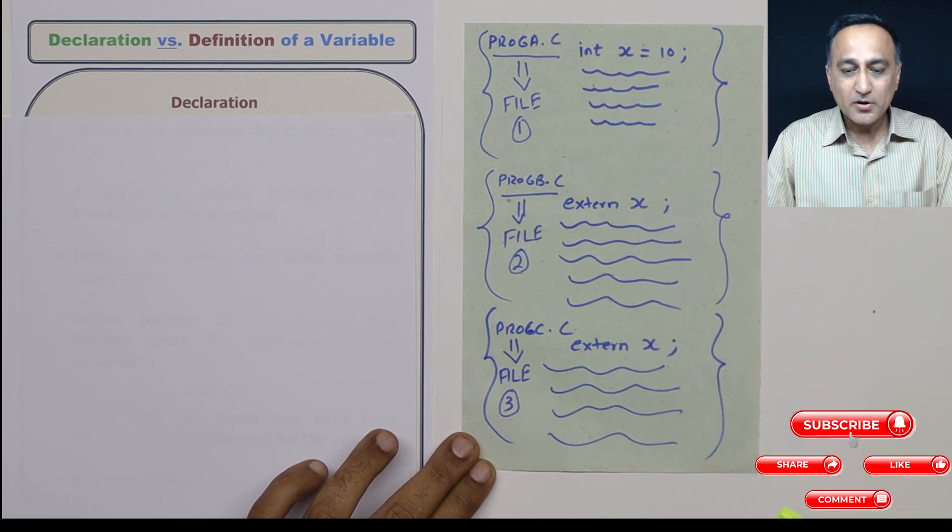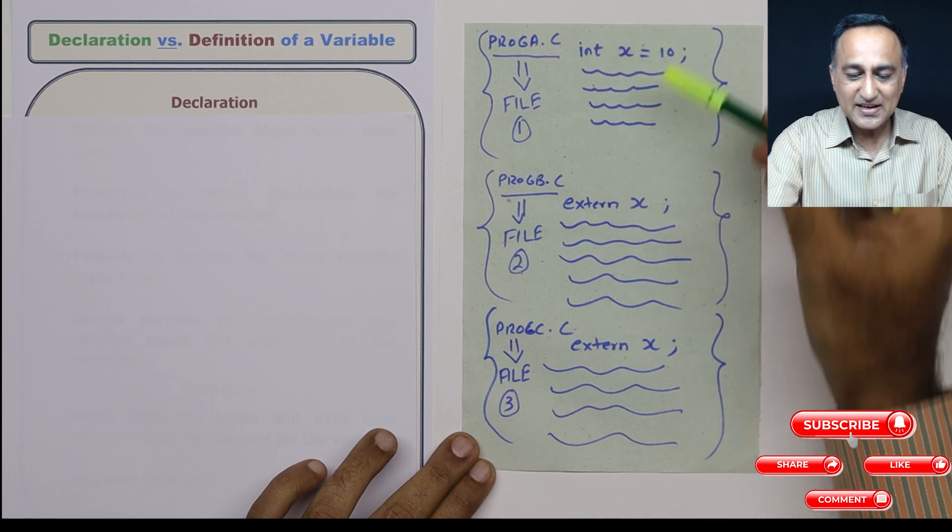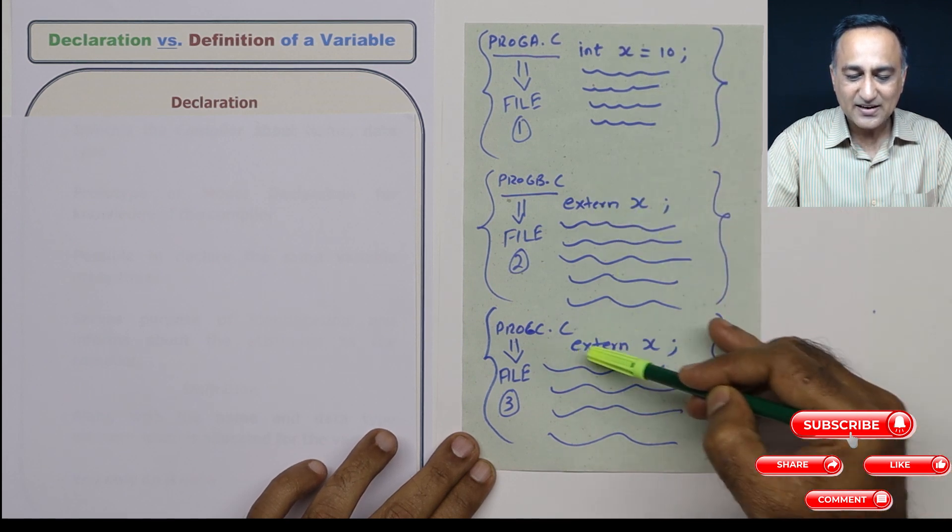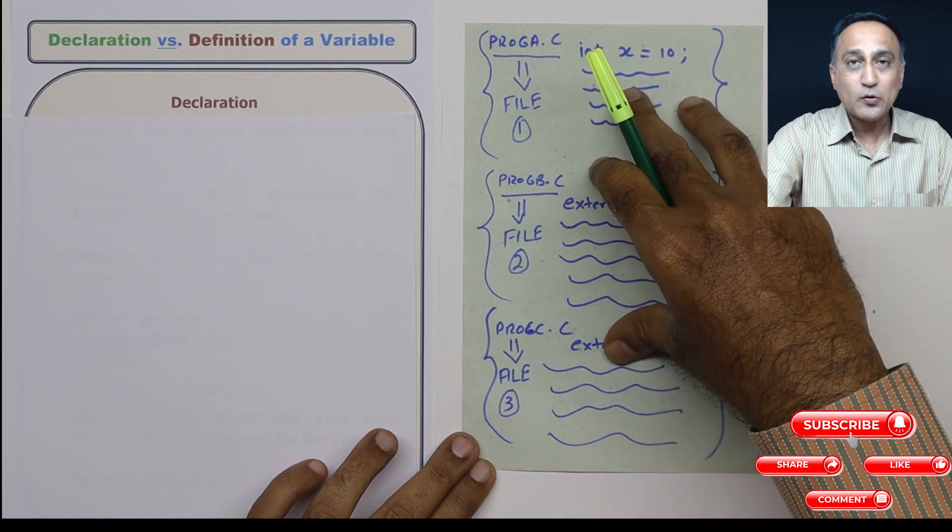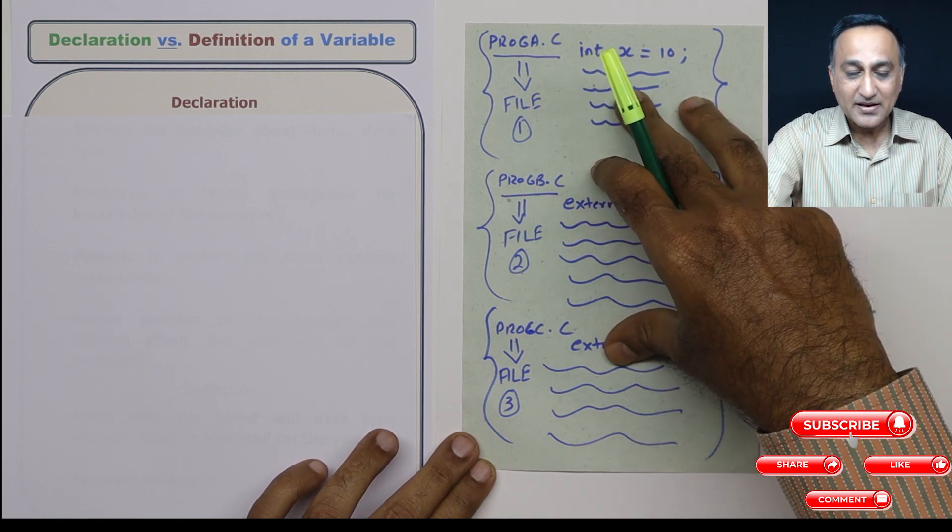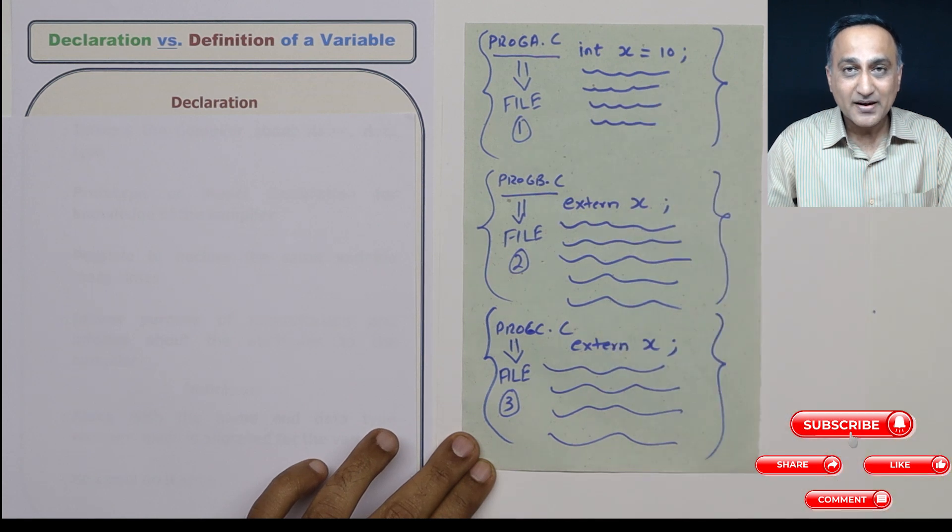Now you cannot declare int x = 10 here, int x = 10 here and int x = 10 here and then combine them and try to compile. You will get an error. It will say re-declaration of x.